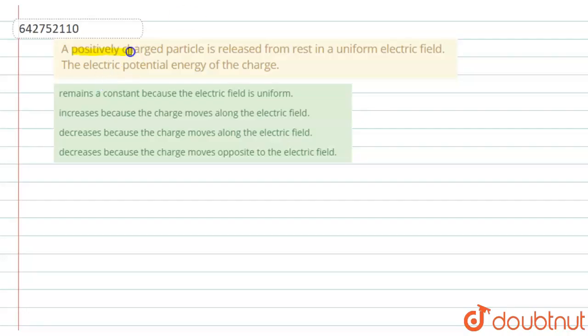When a positively charged particle is released from rest in a uniform electric field, the electric potential energy of the charge, so we have four options here.